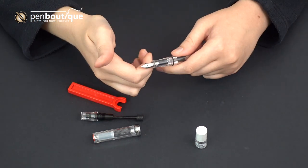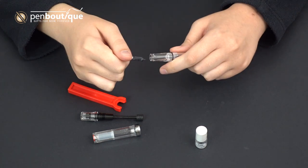To take out the nib it's just a friction fit which means you can just pull it right out with the feed.